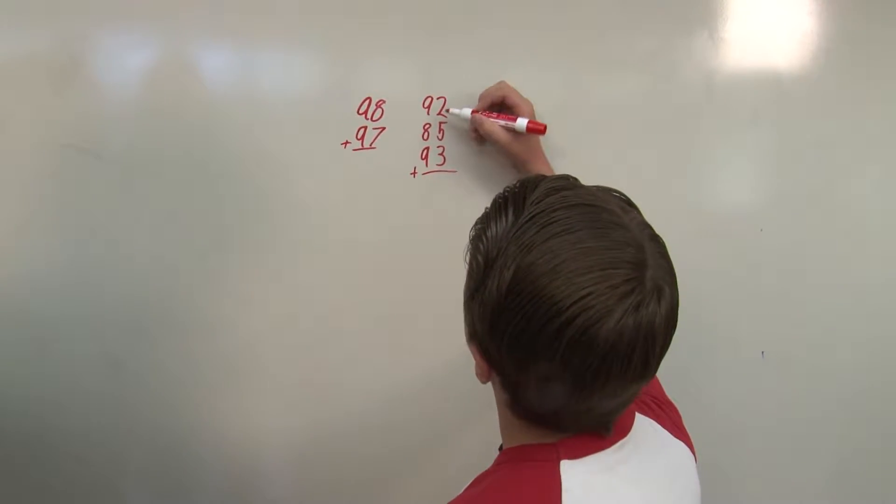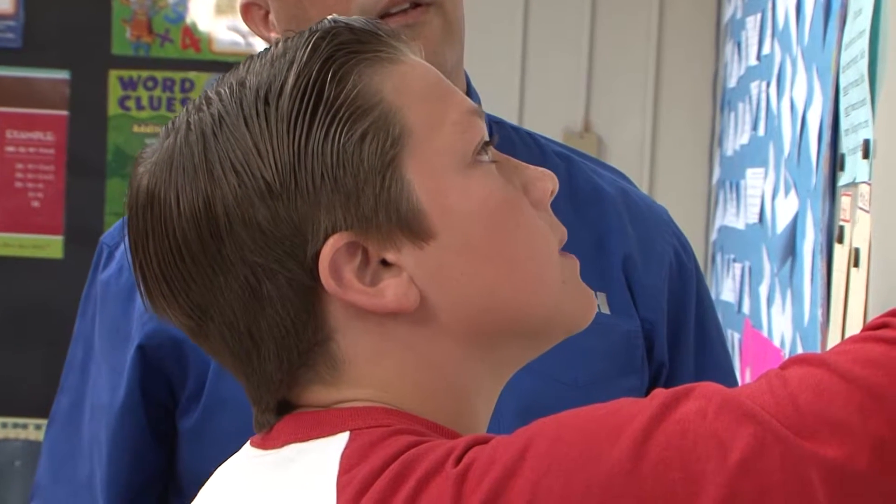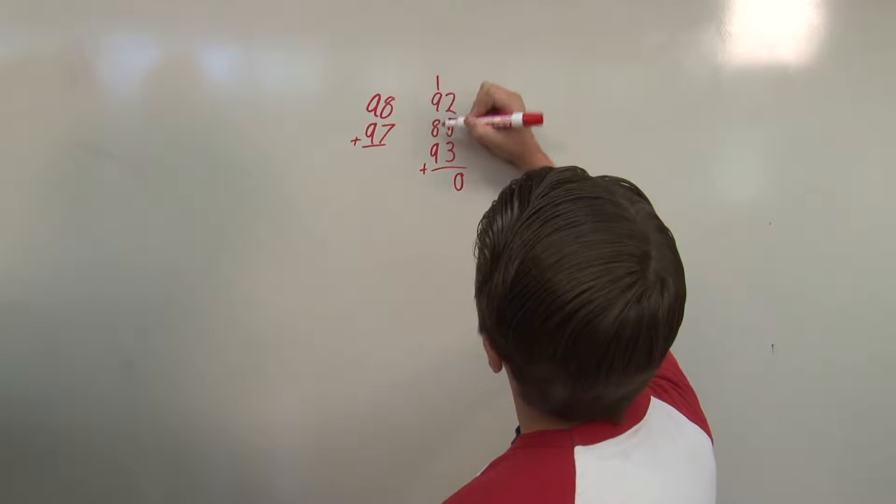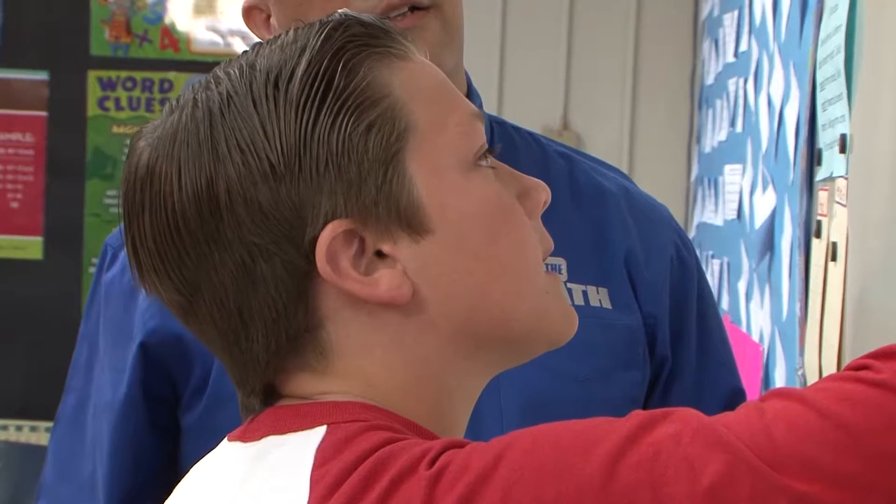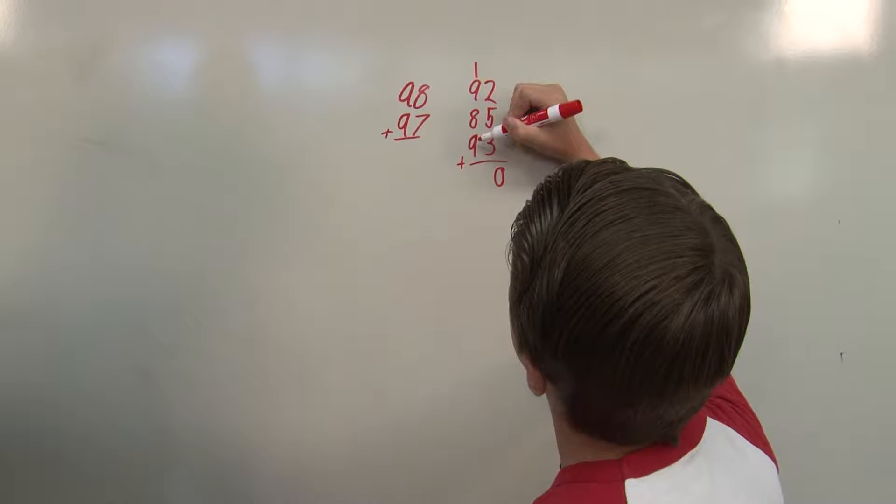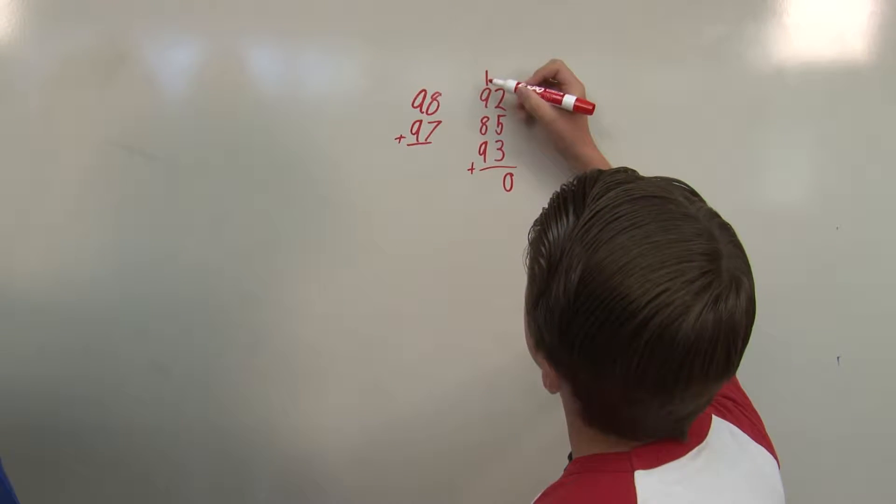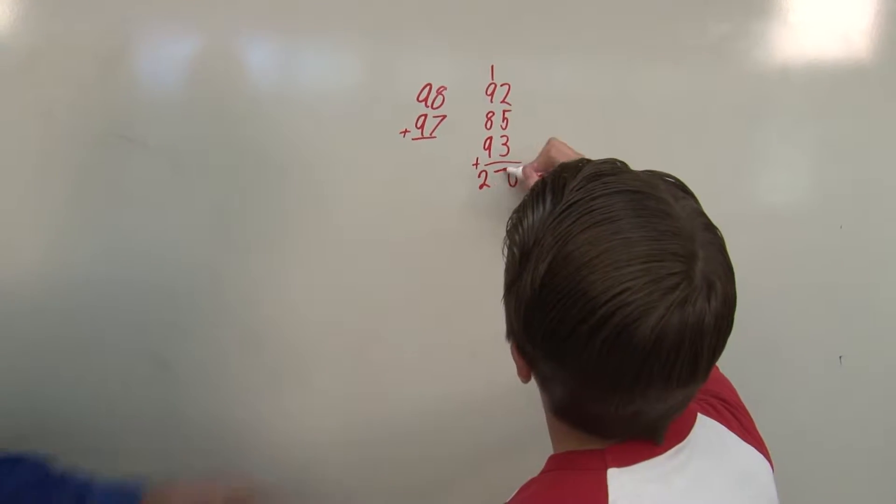5 plus 3 is 8, plus 2 is 10. Carry the 1. 9 plus 1 is 10, plus the 8 is 18. 18 plus 9, or 8 plus 9 is 17, plus 10 is 27. Good. An easier way of doing it.